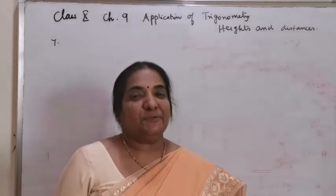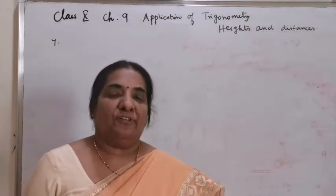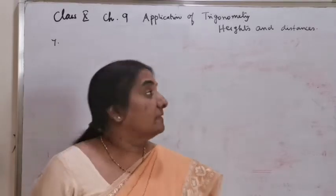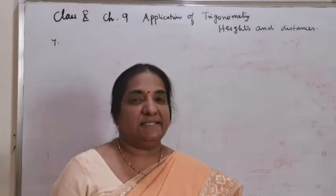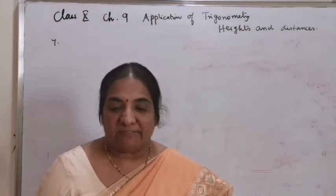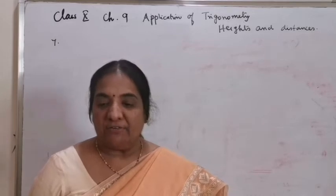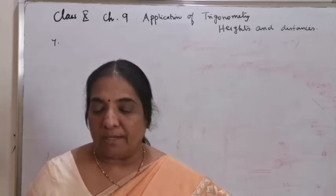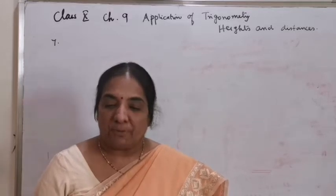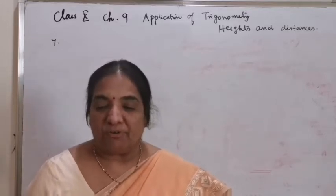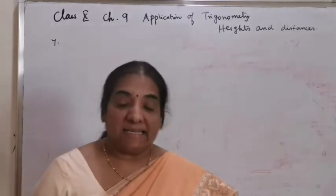Good morning children. Let's proceed with the remaining work problems of the lesson 'Applications of Trigonometry', that is the concept of heights and distances. Question number 7: From a point on ground, the angles of elevation of the top and bottom of a transmission tower fixed on the top of a 20 meter high building are 60 degree and 45 degree.